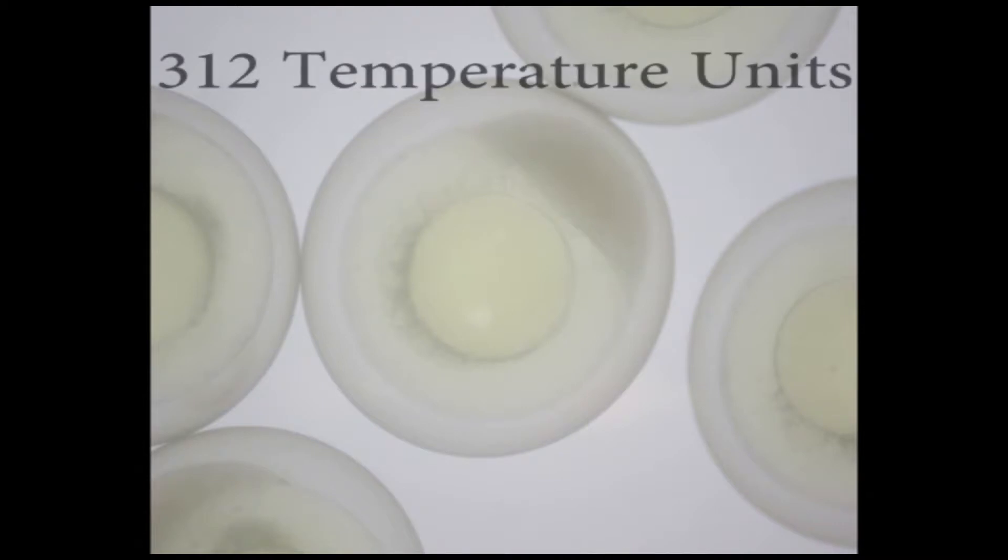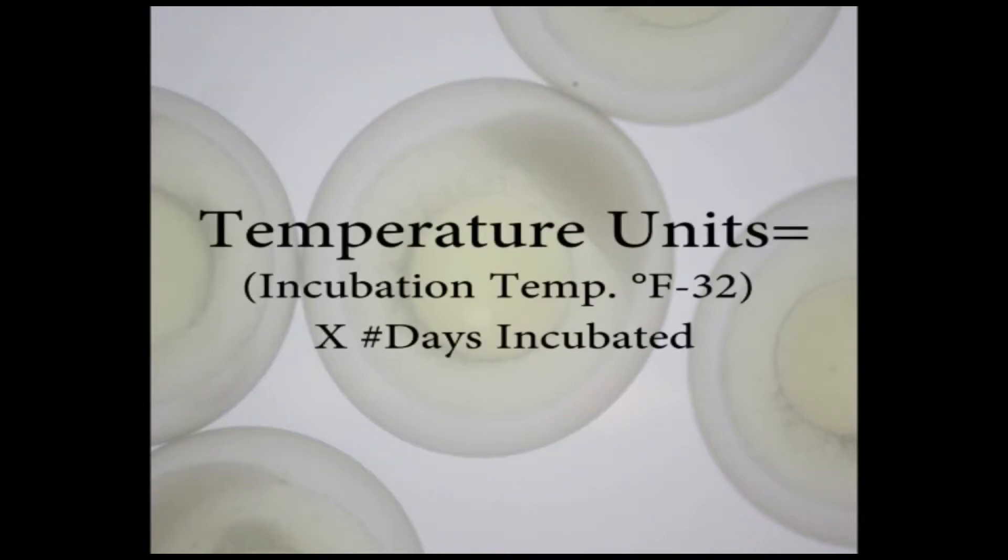Walleyes have around 312 total temperature units in water temperatures ranging from 40 to 56 degrees Fahrenheit. These units will determine their hatch date. Temperature units equal the incubation water temperature in degrees Fahrenheit minus 32 multiplied by the number of days incubated.